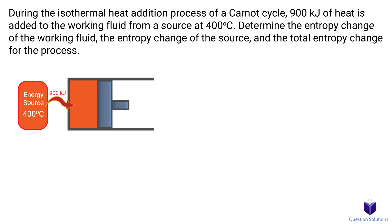Let's take a look at this problem where we have to find the entropy change of a Carnot cycle. Let's start by writing down what we know. 900 kJ of heat is added to the working fluid from a source at 400 degrees celsius. So that's our Q and T values. The first part of the question wants us to figure out the entropy change of the working fluid.